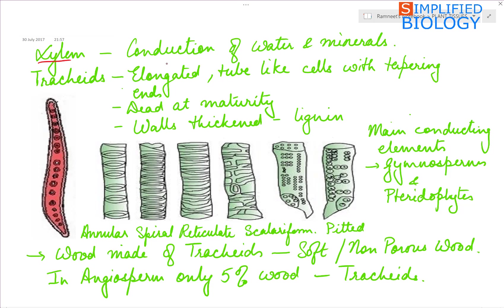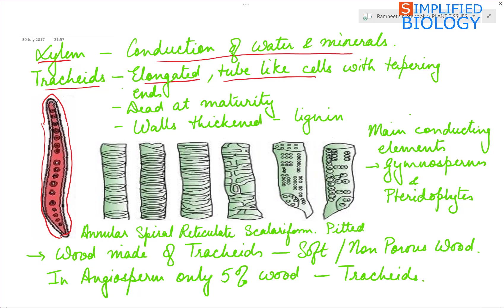Xylem — the function of which is conduction of water and minerals from the roots to the other parts of the plant. Xylem is made up of tracheids, vessels, xylem parenchyma, and xylem fibers. Tracheids are elongated tube-like cells with tapering ends. They are dead at maturity, meaning no protoplasm; a cavity is present. Walls are thickened with lignin. Depending upon the type of thickening, they are divided into five types: annular (ring-like), spiral, reticulate, scalariform, and pitted — in which the pits may be simple pits or bordered pits.